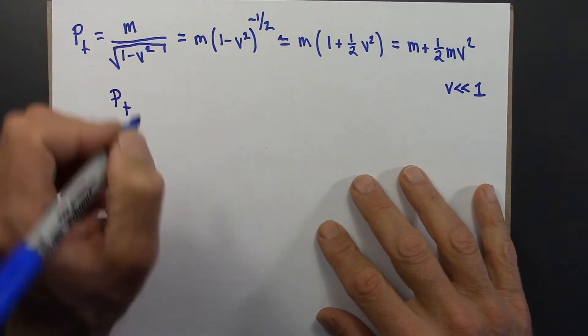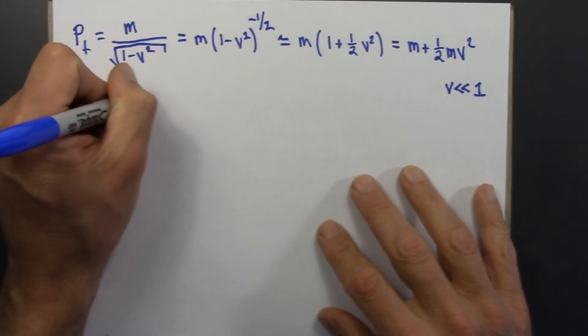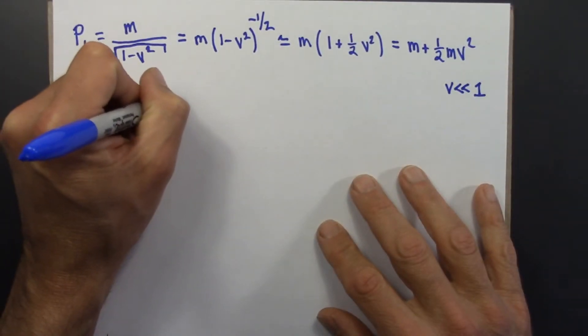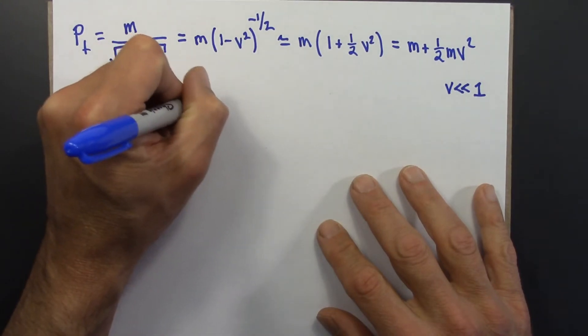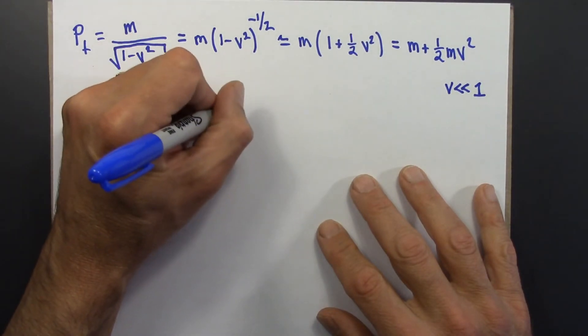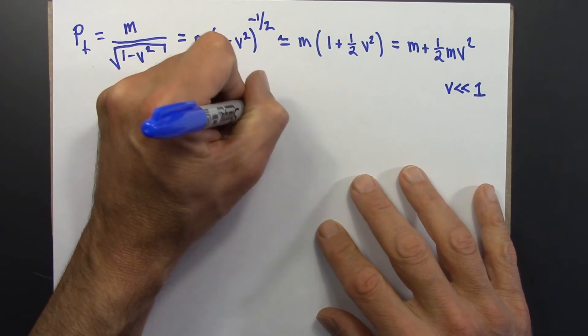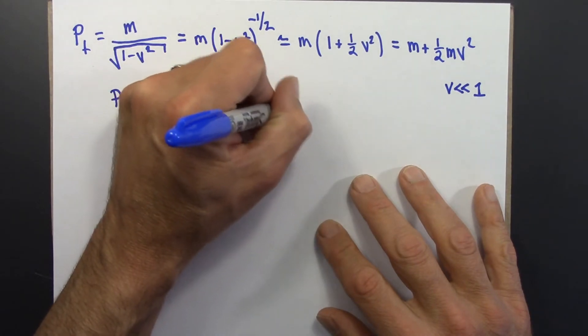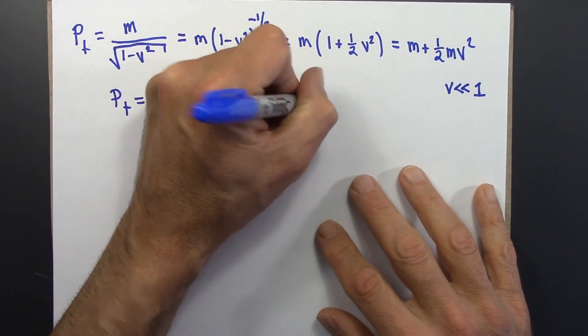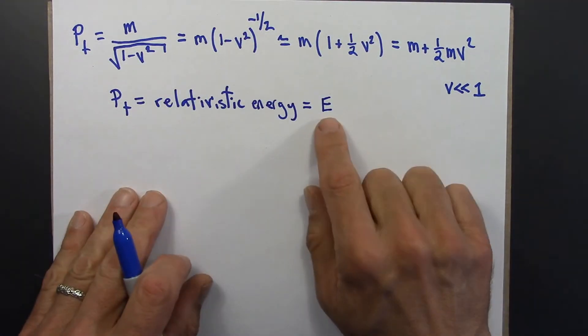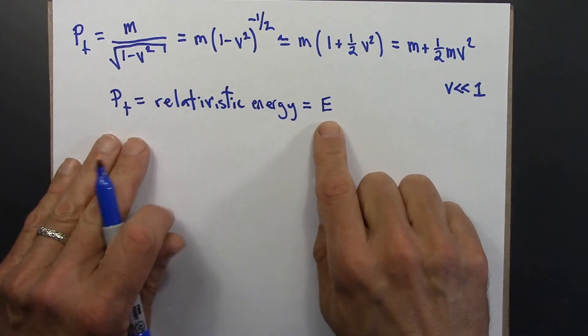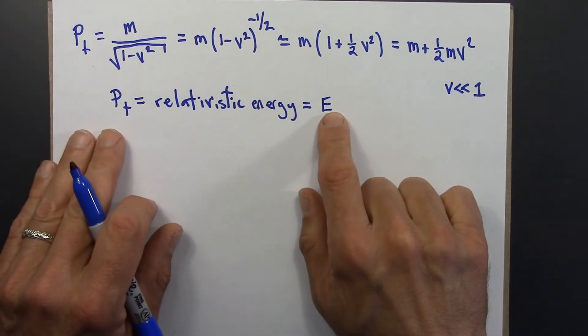So let me write this. So pt, the time component of the four-momentum, is the relativistic energy. Relativistic energy. Abbreviated, appropriately enough, with the letter E. Okay. So this is the relativistic energy.